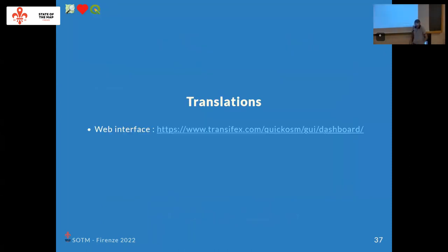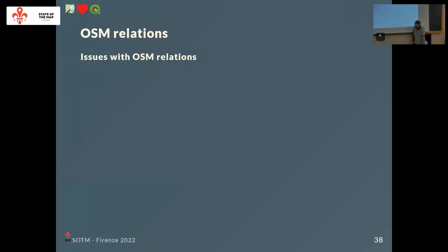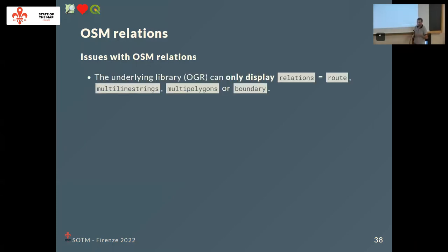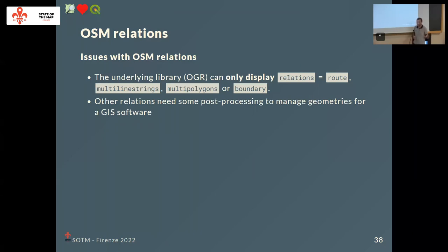Translations are available — you can translate the plugin into quite a few languages already. The issue with OSM relations is that they are quite tricky. The geometry is not always compatible with GIS geometries, since a relation in OpenStreetMap can be a mix of many things. For now, only route relations, multilinestrings, multipolygons, or boundary relations can be opened in QGIS directly. If you want to work with other relation types, you need some post-processing.